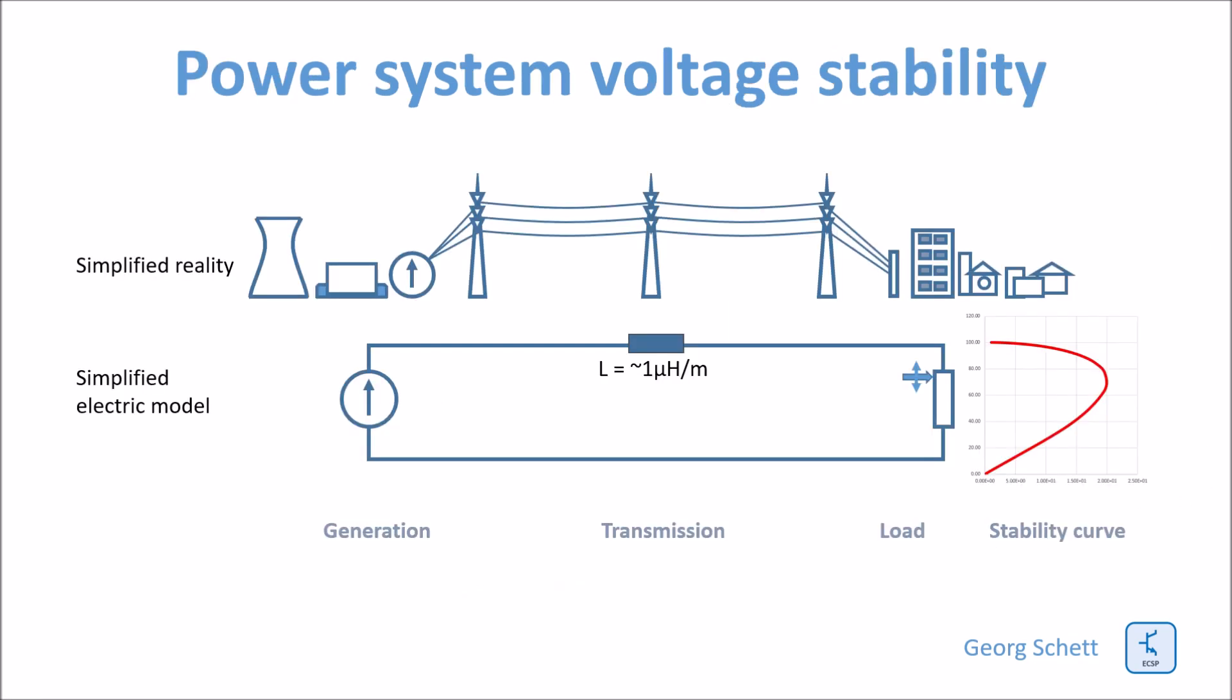Voltage stability is always related to the reactance between the source and the load. So this is the reactance we are talking about. The reactance is composed by the reactance of the source, this could be a power station, and the reactance of the line between the source and the load. Both reactances are combined in our model.